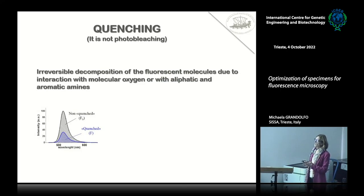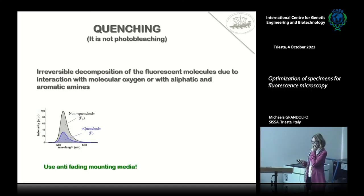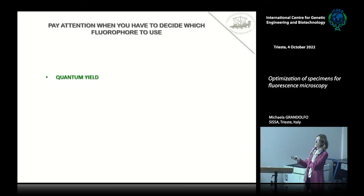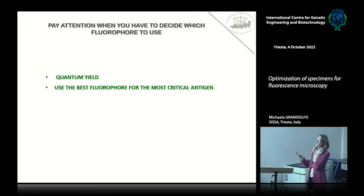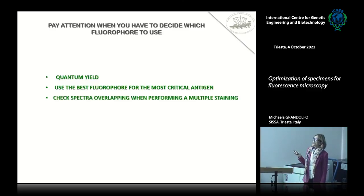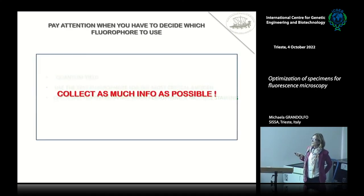Quenching is not photobleaching — it is the reaction of the fluorophore with molecular oxygen or aliphatic or aromatic amines, and you can fight it using anti-fading mounting media. Again: pay attention when choosing your fluorophore. Check the quantum yield, use the best fluorophore for the most critical antigen, take advantage of the fluorophore if your antigen is rare or your primary antibody is not working well, check spectral overlap when performing multiple staining, and in synthesis, collect as much information as possible.